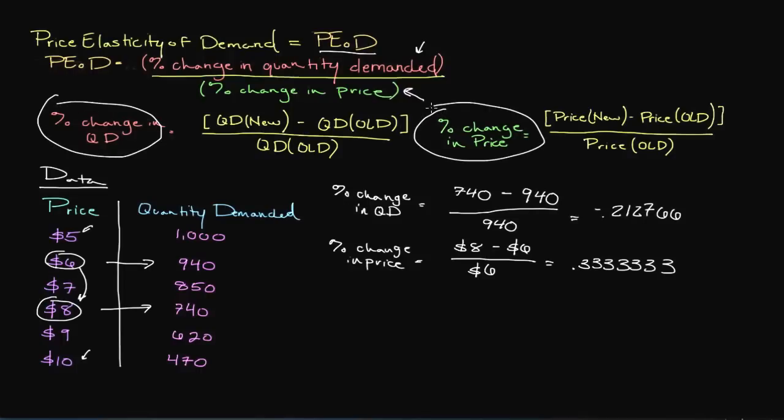So we've already figured out what our percentage change in quantity demanded and we've also figured out our percentage change in price. Now the last thing we have to do is figure out the price elasticity of demand. So we have to divide the two figures there. And so if we do that, if we take negative .212766 and we divide that by .3333333 we should get something along the lines of negative .6382981.